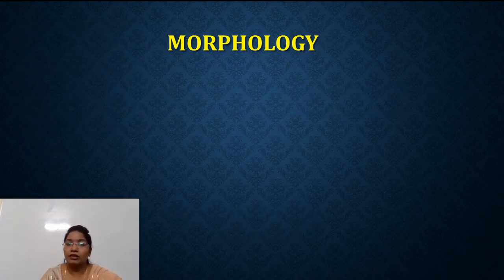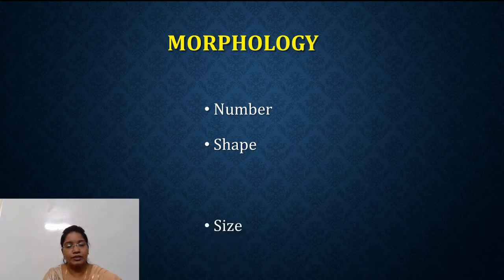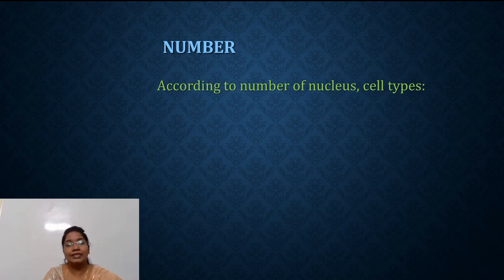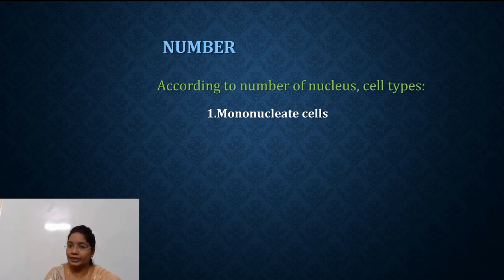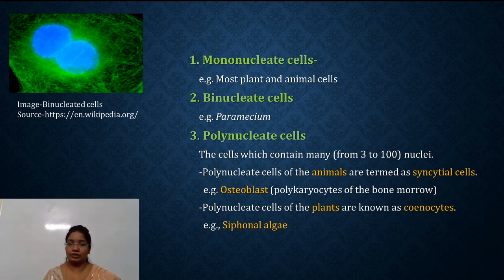We will discuss the morphology of nucleus. For morphology, we will consider the number of nucleus, shape of nucleus, and finally size of nucleus. According to number, cells are classified as mononucleated cells, binucleated cells, and polynucleated cells. Mononucleated cells contain a single nucleus — most plants and animals contain a single nucleus, so they are mononucleated.